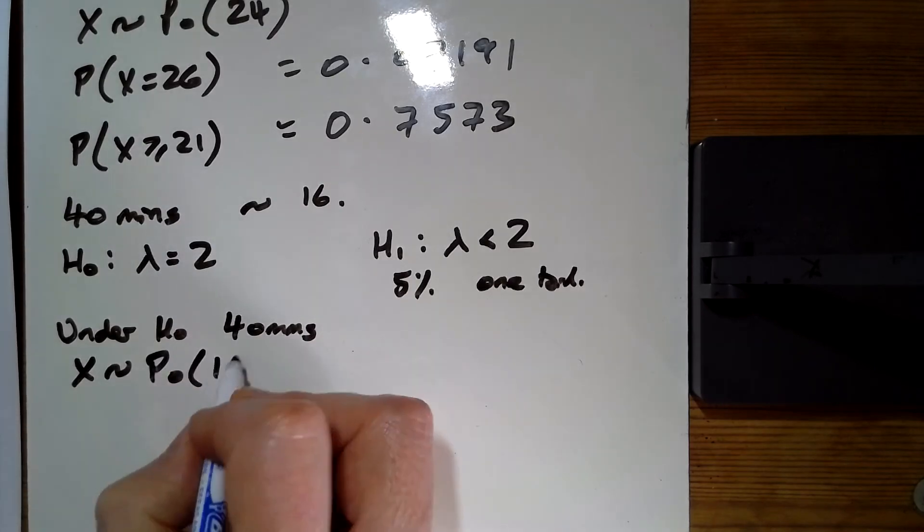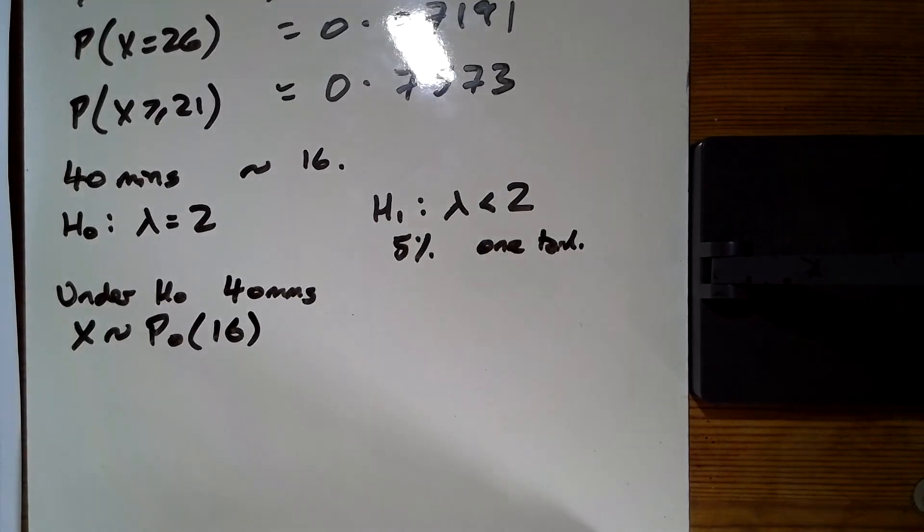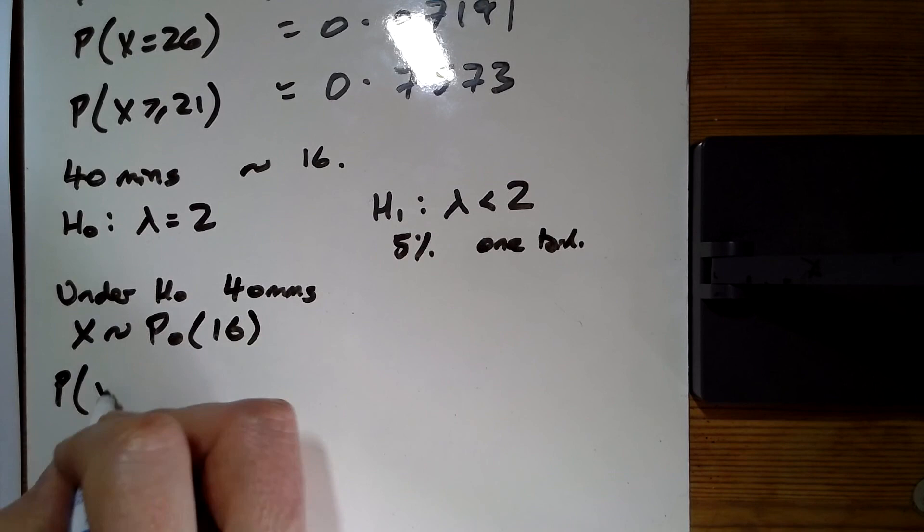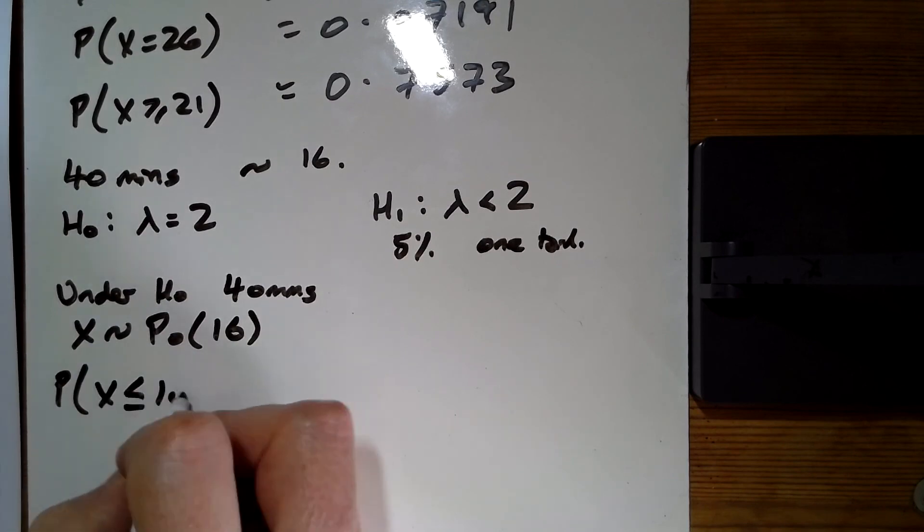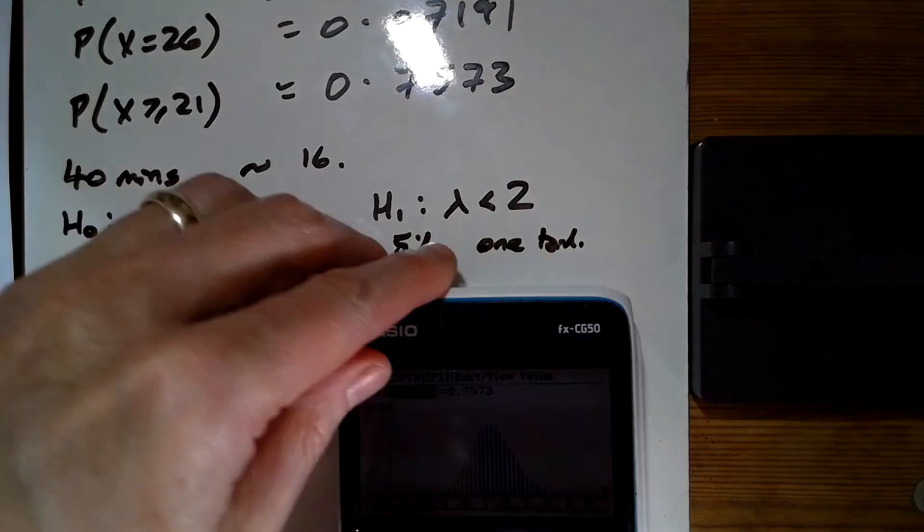And it's found to be 10. So the probability that X is less than or equal to 10 from a mean of 16, let's grab that.